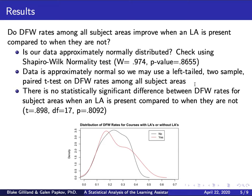We pair on courses and use a left-tailed test since we're computing LA DFW rate minus non-LA DFW rate. We'd want to see a difference less than zero, meaning LA courses have lower DFW rates. But we get a p-value of 0.8092 — the opposite of what we hoped. The density plot shows the red curve (LA courses) and black curve (non-LA courses) with no meaningful leftward shift for LA courses.